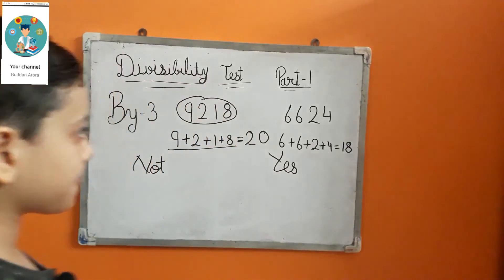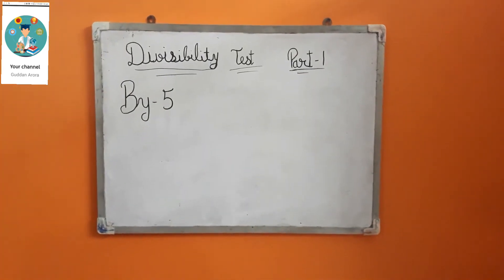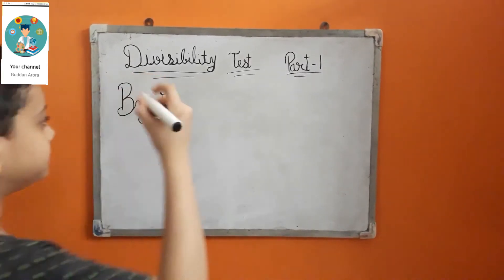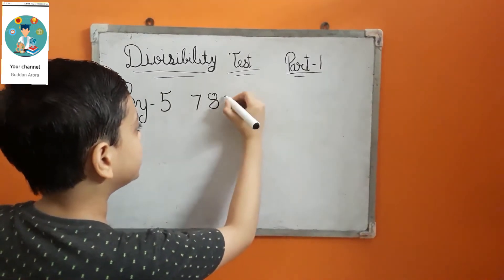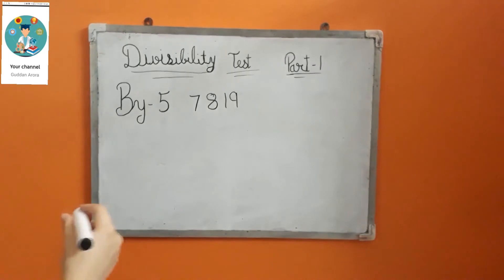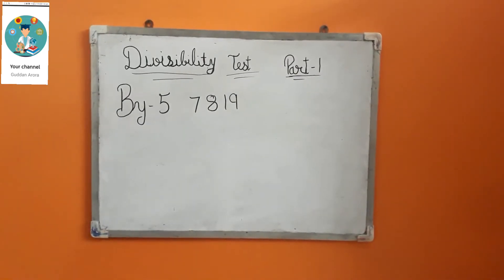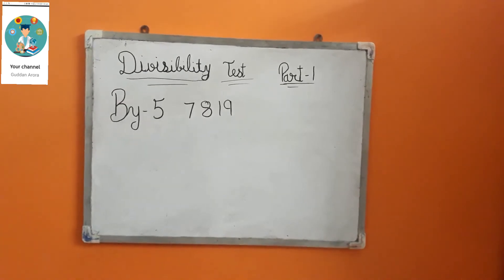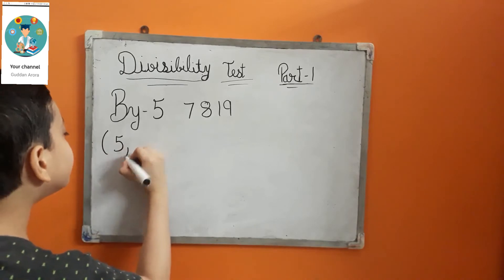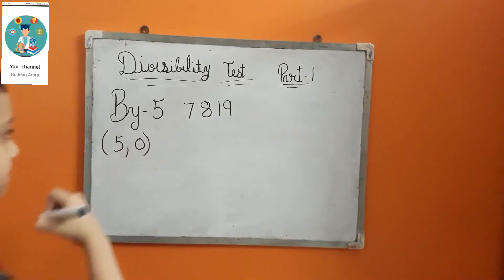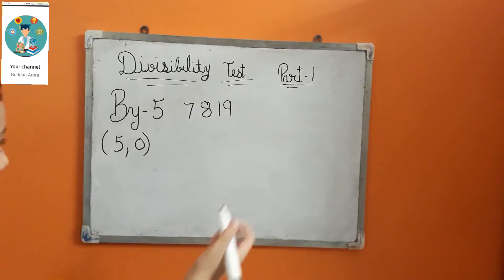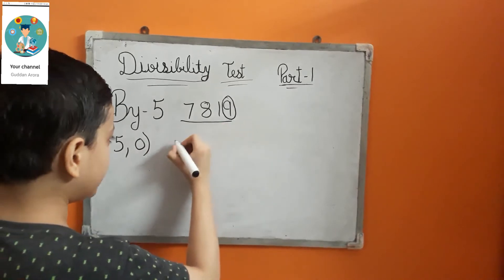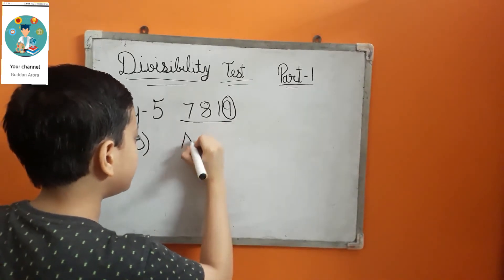Now we will discuss divisibility by 5. I am taking an example: 7819. In divisibility by 5, we have to check the ones digit — if it is 5 or 0. In this example, the ones digit is 9, so this number is not divisible by 5.